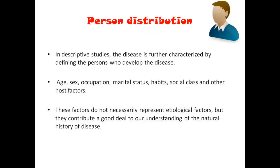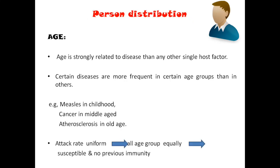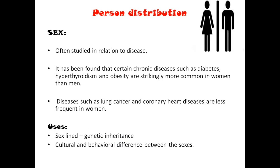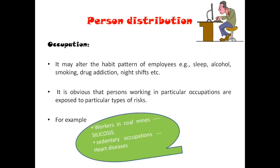We collect data from persons and categorize into age, gender, occupation, and marital status so we can understand in which age group, gender, social class, and marital group the disease is distributed. For example, measles happens in childhood, cancer in middle age, and atherosclerosis in old age. Few diseases are prevalent in males and few in females. In occupation-related diseases, workers in coal mines usually have silicosis. Social class: a few diseases are very common in upper class and few in low socioeconomic background.